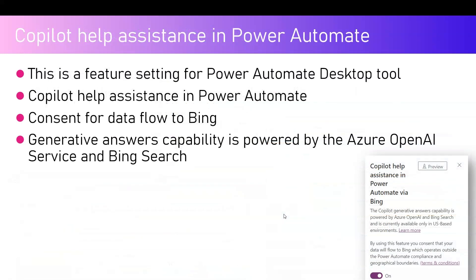The last setting is Copilot Help Assistance in Power Automate Desktop. This provides help assistance while building Power Automate desktop flows. If this setting is turned on, your data will flow to Bing, which operates outside the Power Automate compliance and geographical boundaries. The Copilot generative answers capability is powered by Azure OpenAI and Bing Search and is specifically available for US-based environments as of now.